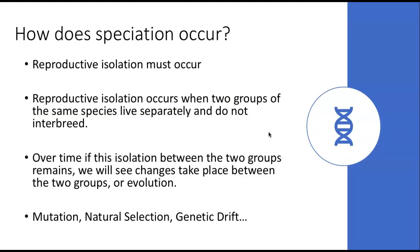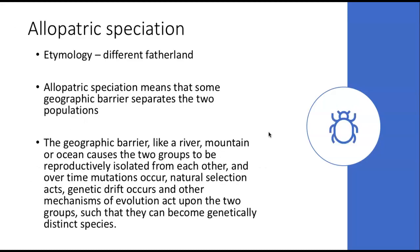So how does speciation occur? In order for speciation to occur, reproductive isolation has to occur — whether that means they cannot reproduce at all, or the offspring they produce are not fertile. Reproductive isolation occurs when two groups of the same species live separately and do not interbreed. Over time, if that isolation remains, we see changes take place driven by the mechanisms of evolution: mutation, natural selection, genetic drift, or all of the above.